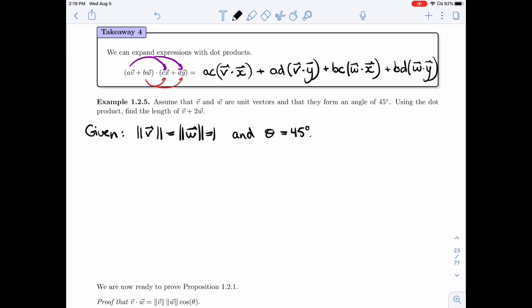Using the dot product, so that tells you that you can't just draw a picture and try to argue with that. You really need to use the algebra, the dot product that we've just learned. So using the dot product, you need to find the length of V plus 2W. So the goal is the length of V plus 2W.